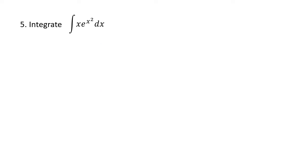Next: x times e to the x squared. This might look pretty similar to problem 2, but actually this isn't integration by parts at all. Watch what happens when we try to use integration by parts. We might think there are two functions: x and e to the x squared. But I can't take the antiderivative of e to the x squared — there's no way to do that. So if I'm going to use integration by parts here, e to the x squared has to be my u because there's no simple antiderivative, and then dv would have to be x dx.